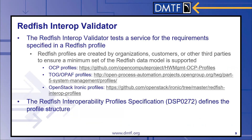The Redfish Interop Validator tests the service for the requirements specified in a Redfish profile. Redfish profiles are created by organizations, customers, or other third parties to ensure a minimum set of the Redfish data model is supported. This includes specifying expected resources, properties, and actions — requirements that go beyond the minimum Redfish requirements specified by DMTF. The Open Compute Project publishes profiles containing manageability requirements for various classes of OCP products. The Open Group's Open Process Automation Forum has profiles with Redfish requirements for industrial process automation environments, and OpenStack publishes profiles for integration with their bare-metal provisioning software Ironic. Redfish profiles are JSON documents that follow a format defined in the Redfish Interoperability Profile specification.